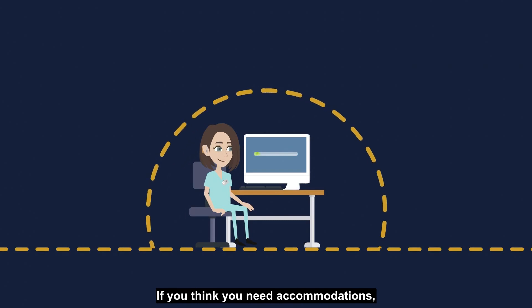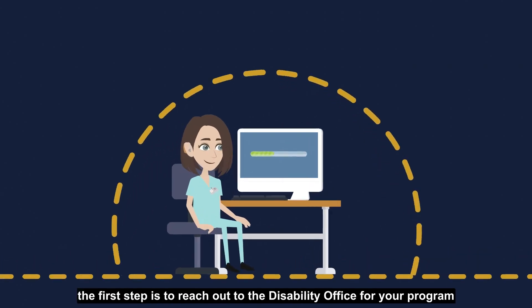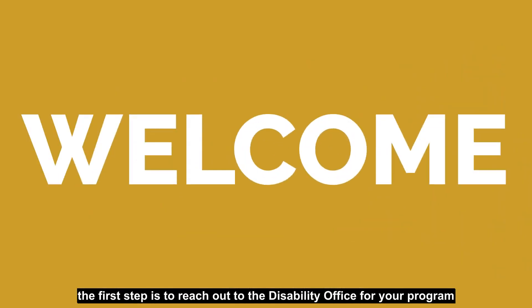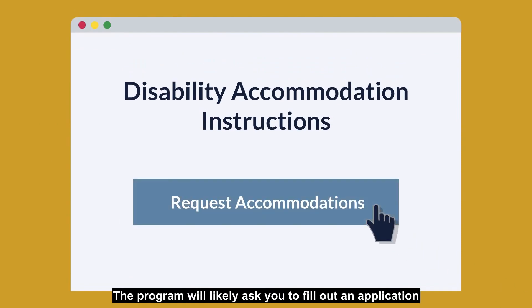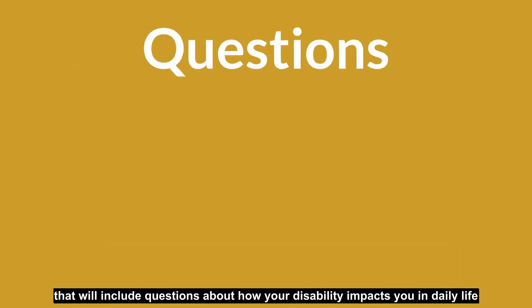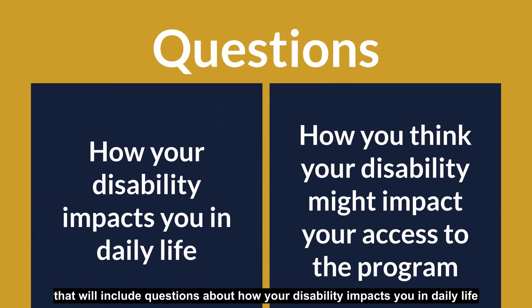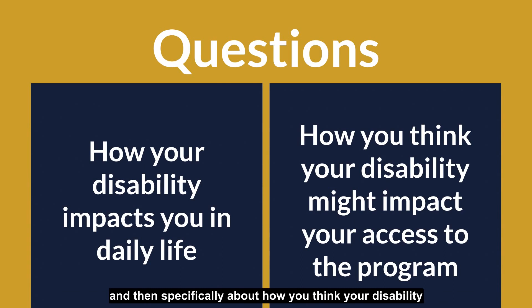If you think you need accommodations, the first step is to reach out to the disability office for your program and request an appointment with a DRP. The program will likely ask you to fill out an application that will include questions about how your disability impacts you in daily life, and then specifically about how you think your disability might impact your access to the program.